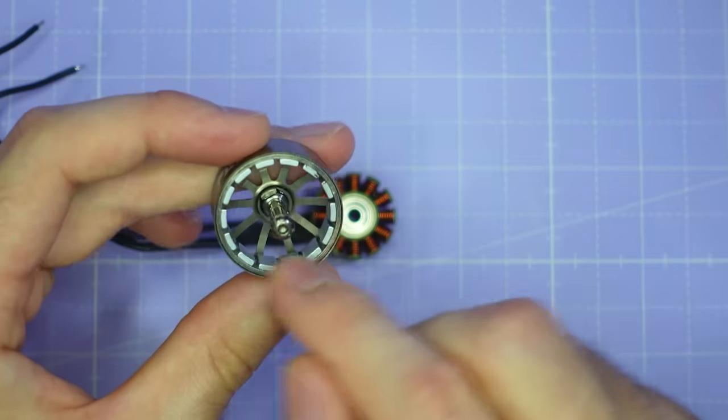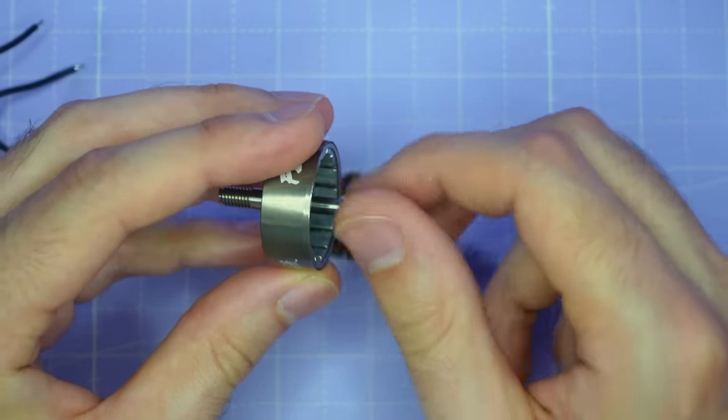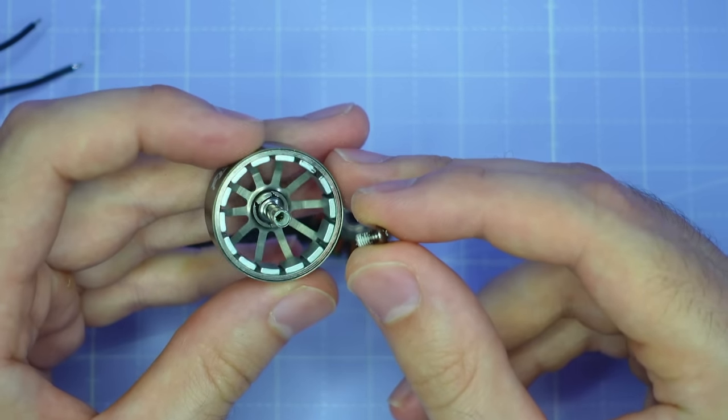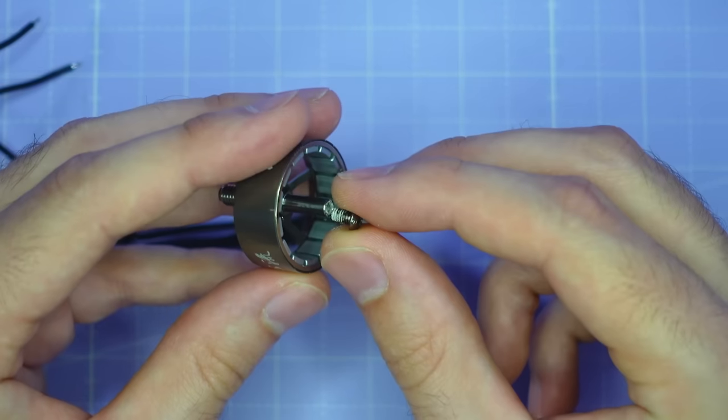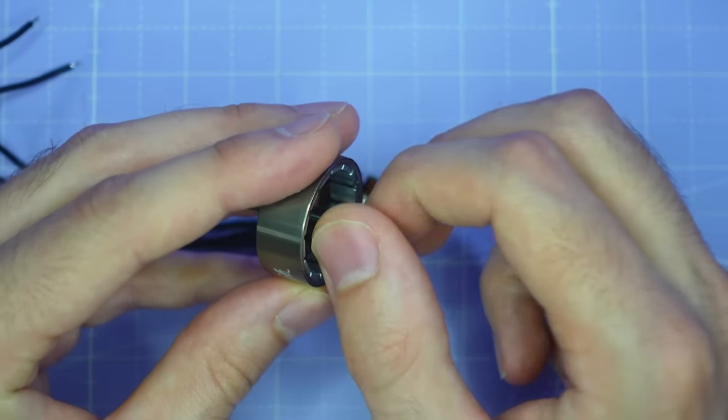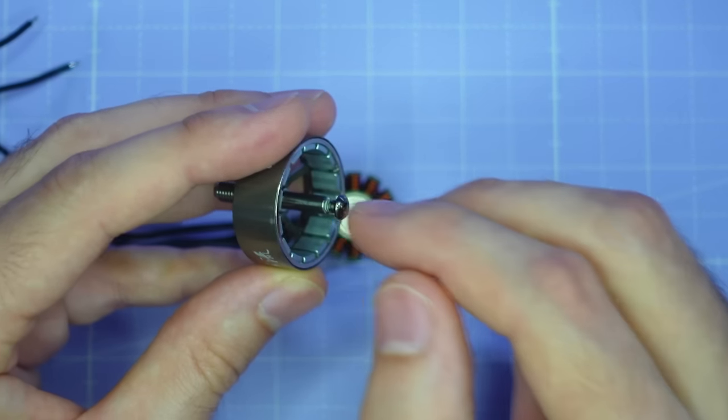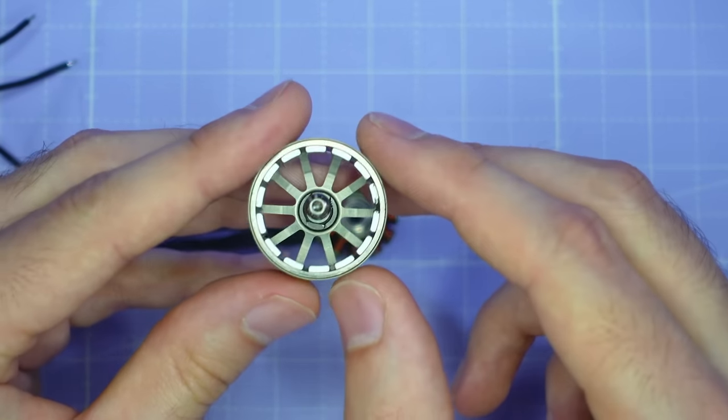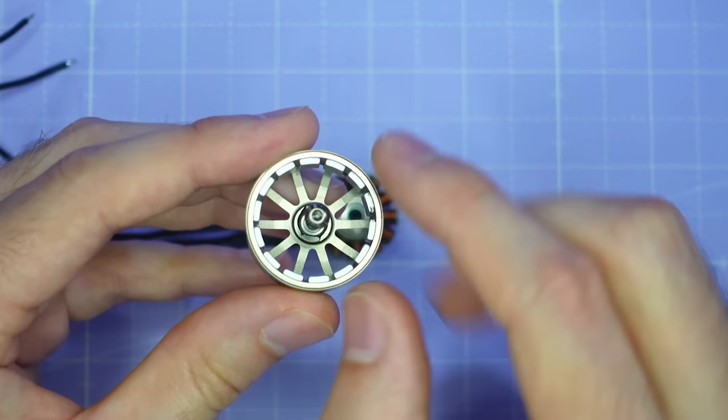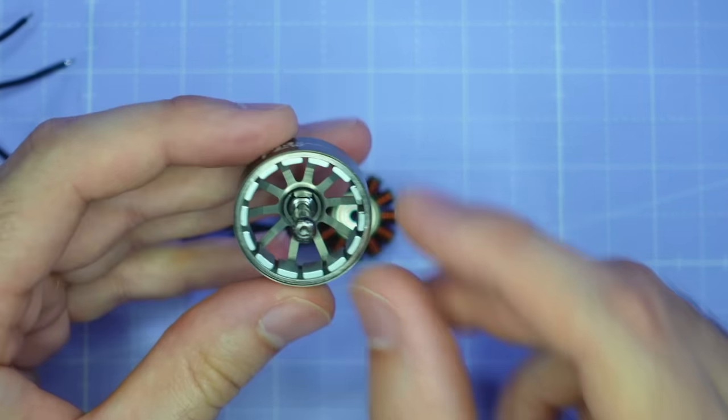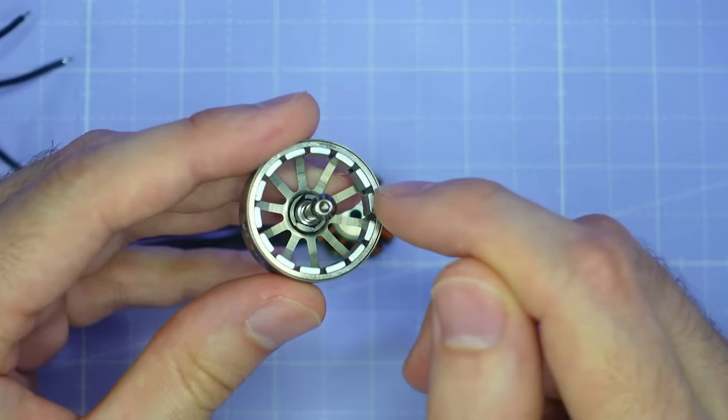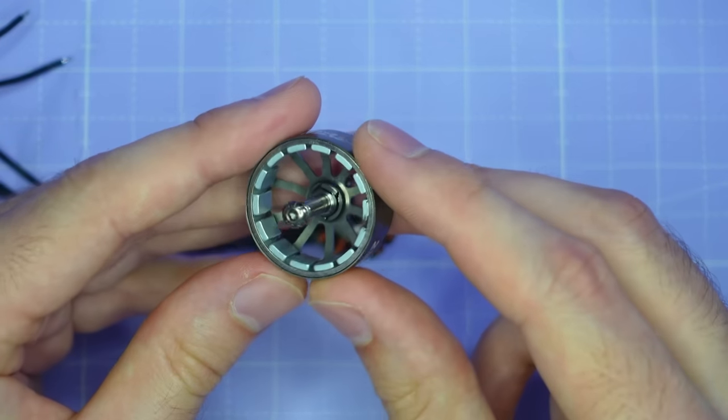With the motor apart, we can have a look inside the bell. The shaft screw is Loctited into the shaft, so you do need to apply a little bit of force to undo that screw. You might need to warm the motor up a little bit with a heat gun or something like that just to loosen that Loctite if it's a little bit tight. The magnets are glued into the top part of the bell and there is a clear use of quite a lot of adhesive so I imagine these magnets are not going to be going anywhere. They're going to be very secure.